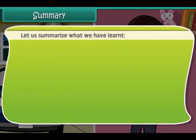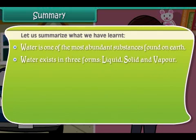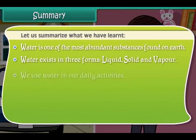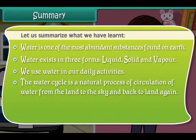Let's summarize what we have learned so far. Water is one of the most abundant substances found on earth. Water exists in three forms: liquid, solid, and vapor. We use water in our daily activities. The water cycle is a natural process of circulation of water from the land to the sky and back to land again. We should not waste water. Dumping garbage in water bodies causes pollution.